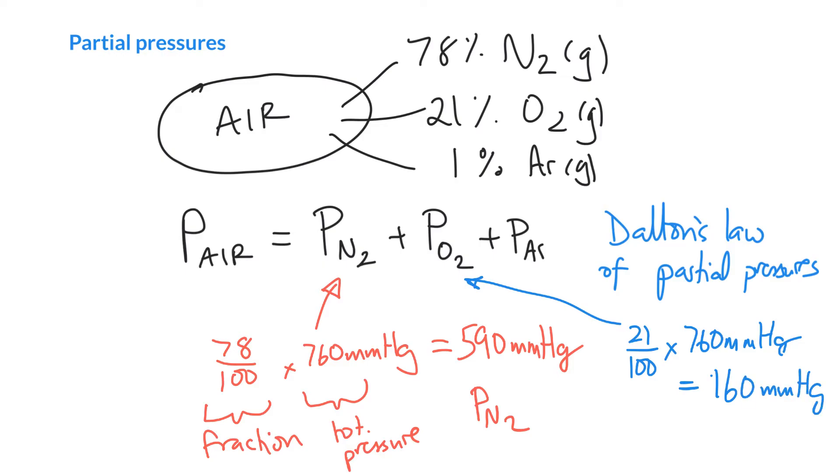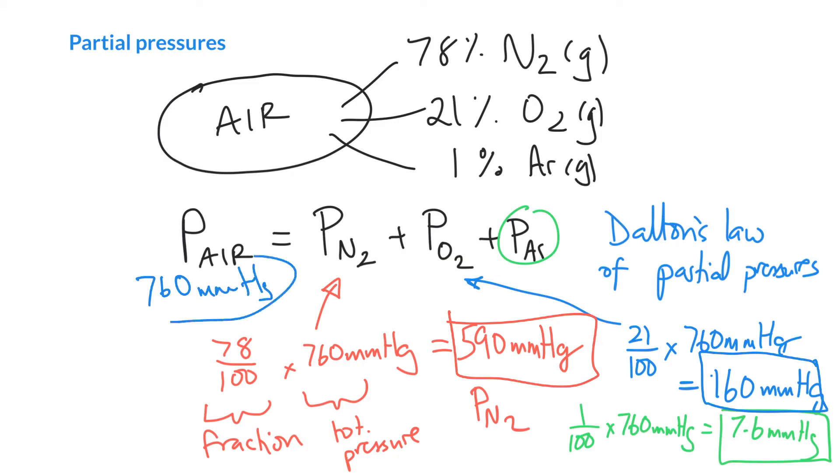And we can do the same thing for the argon. So if we do the argon in green, it is 1%. So that's 1 over 100 times by 760 millimeters of mercury. And that's something like 7.6 millimeters of mercury. And if we add all those up, if we add together the 7.6 with the 160 from the oxygen with the 590 from the nitrogen, we should get something very close to the total pressure of 760 millimeters of mercury. So that makes sense.